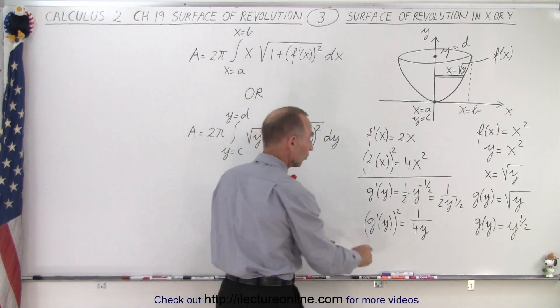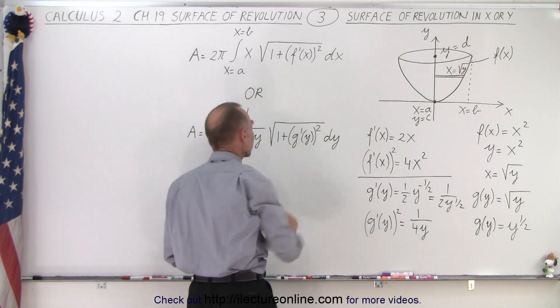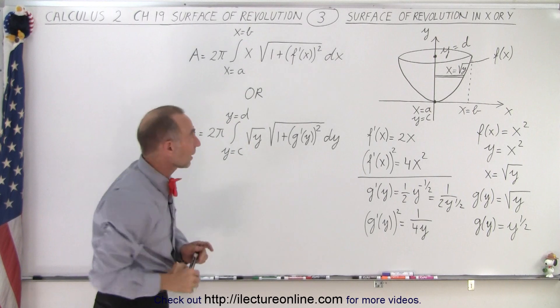The reason why we need to do that, of course, we need to take the derivative of the function and square because that goes in here inside the radical. So we can either solve it like this.